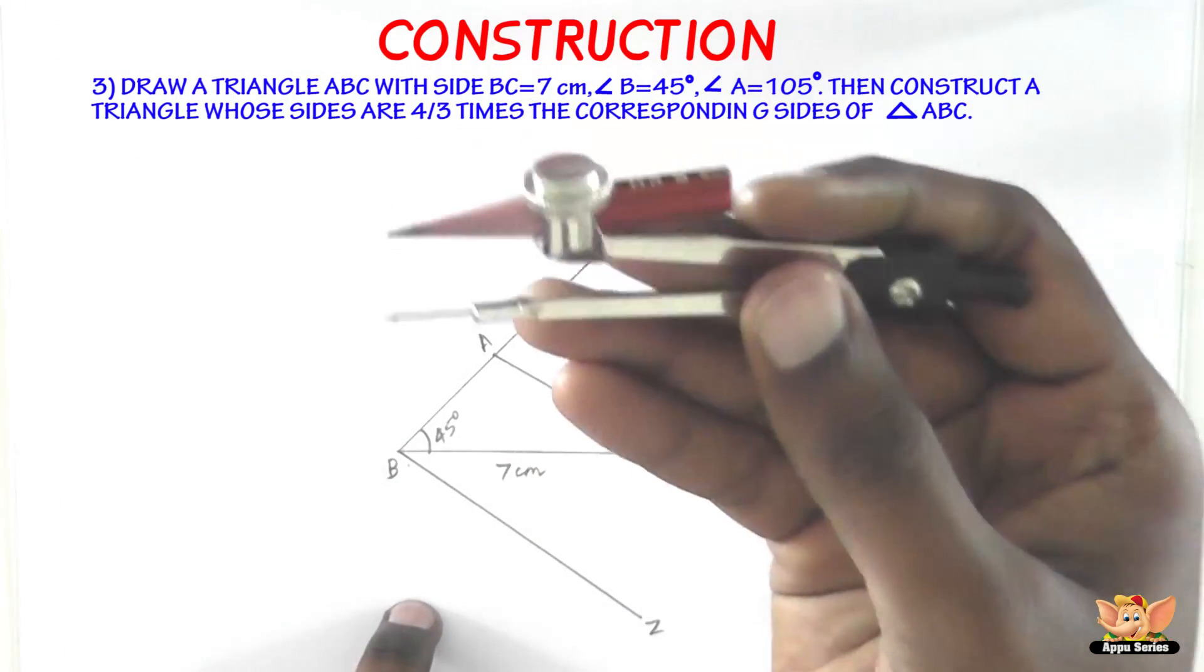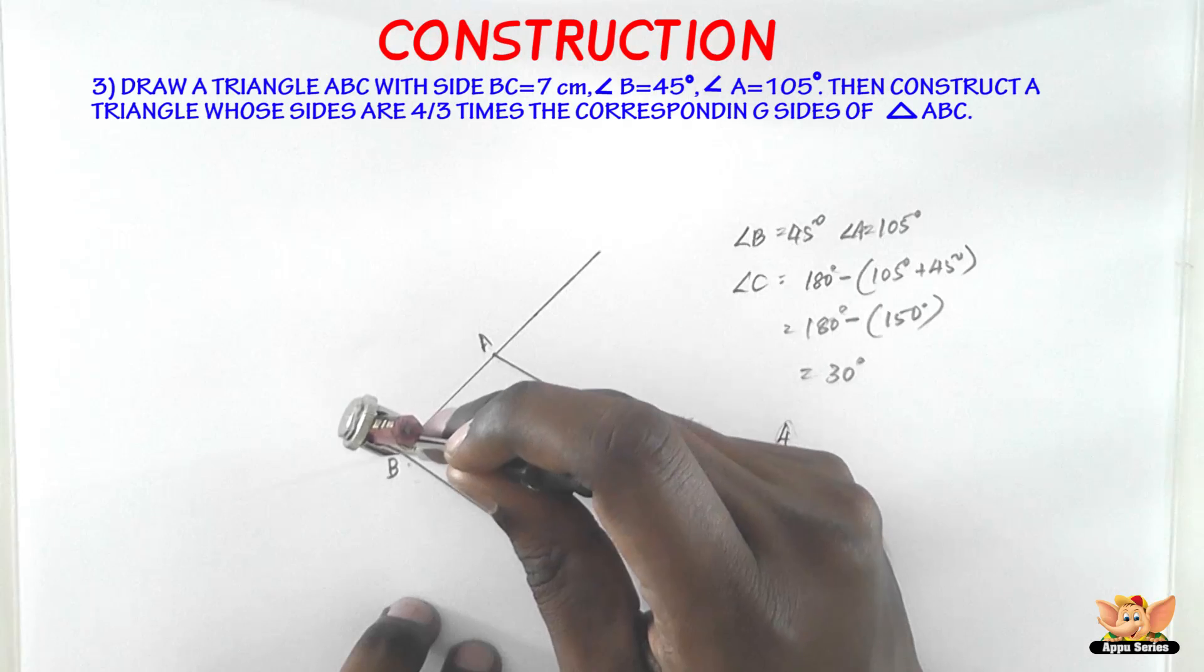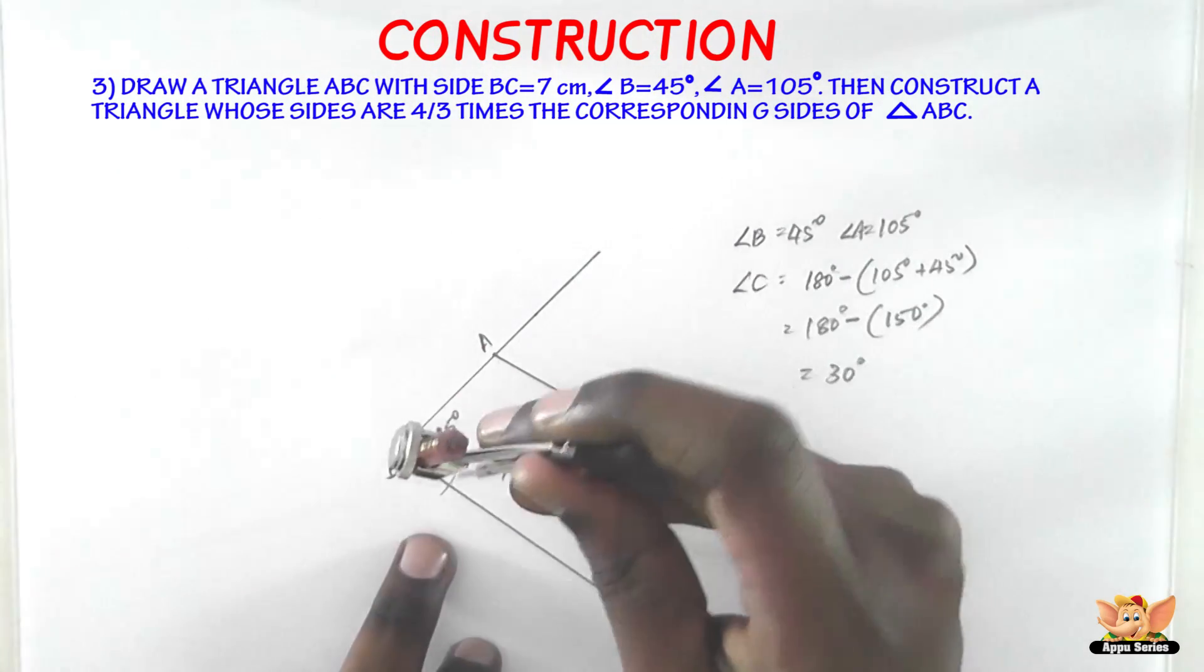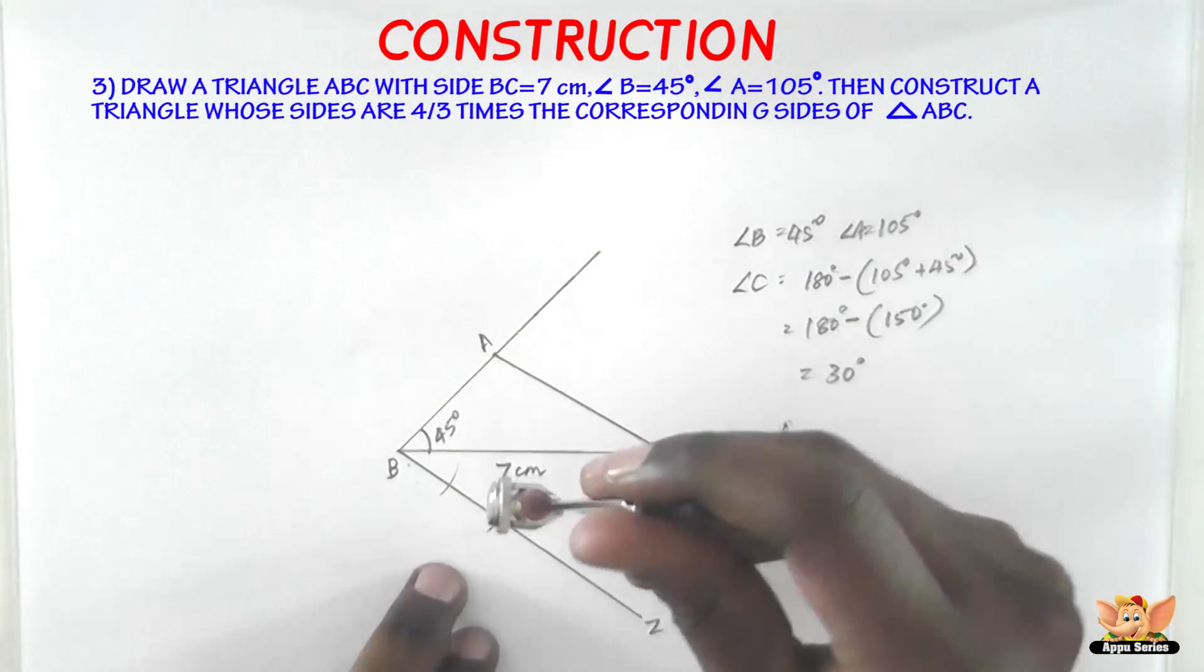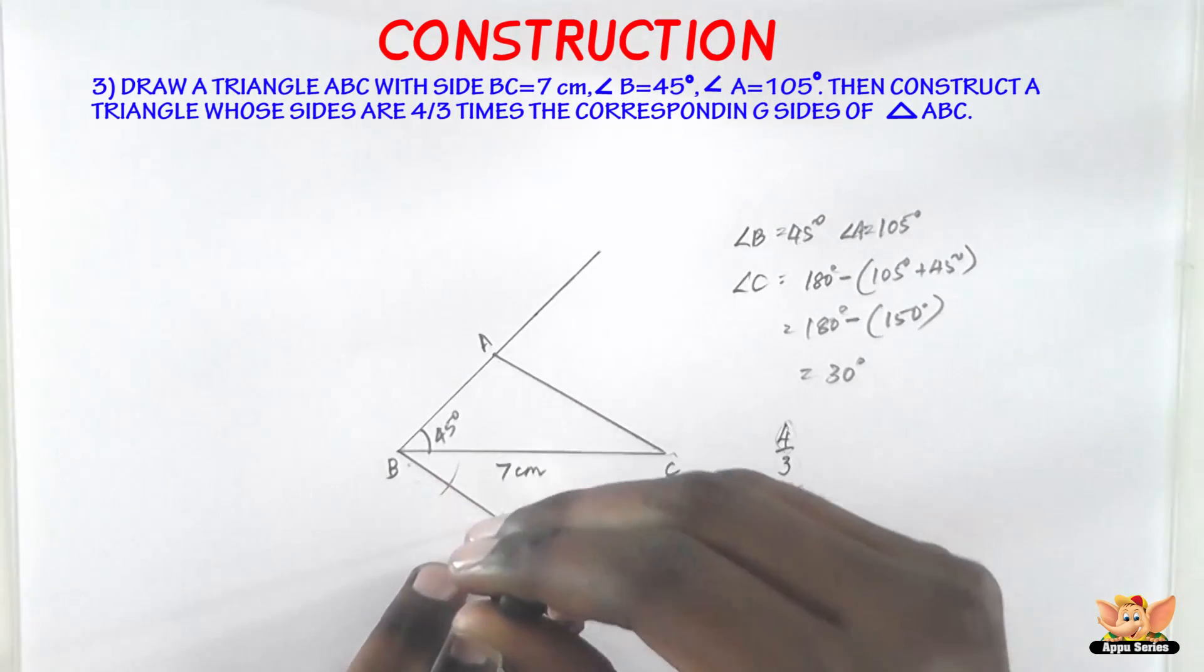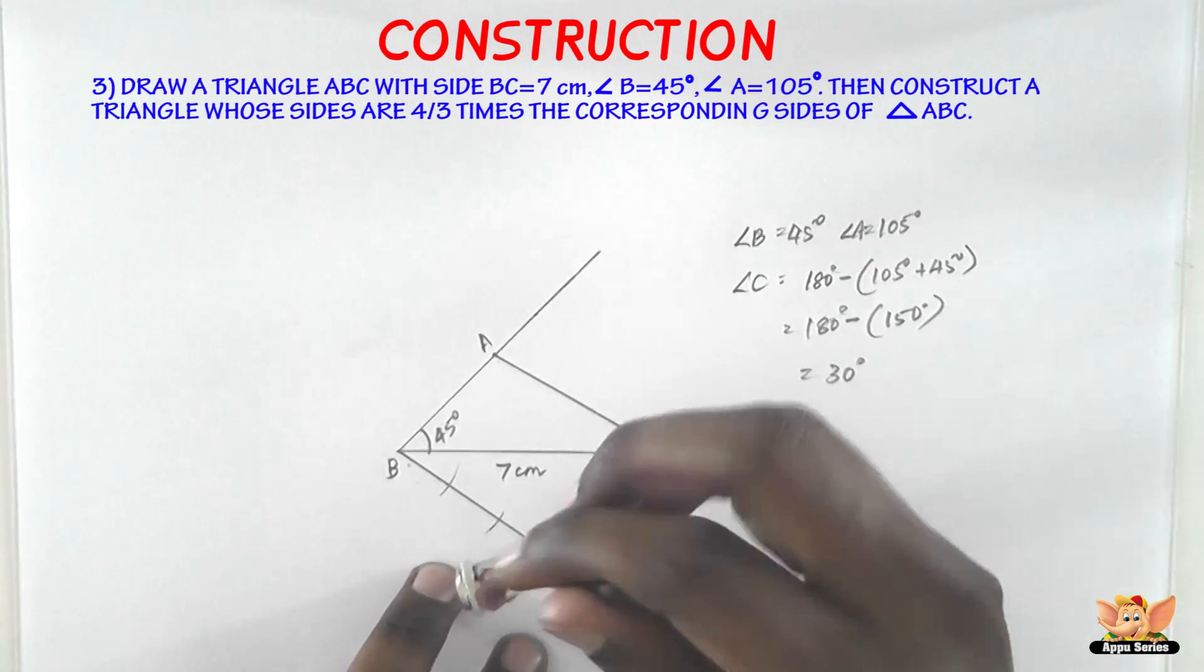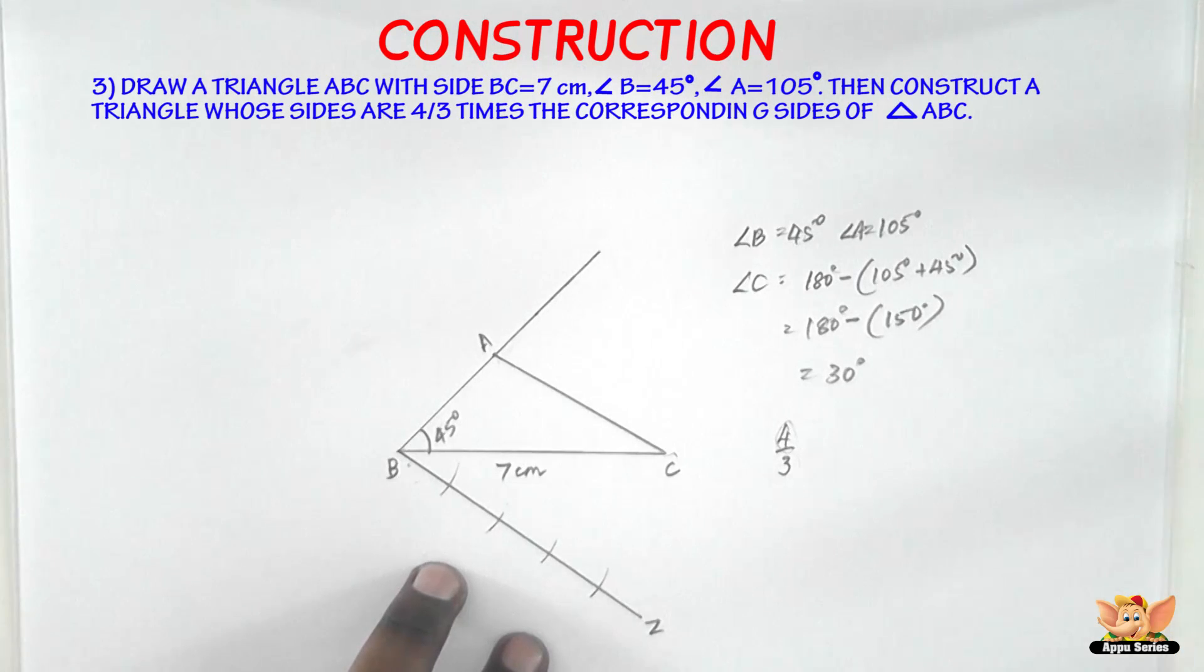And now take the compass with any measurement that you want, anything convenient to you. I'm taking this one. Keep it on B and start cutting arcs on BZ. So here it is. And another one. And another one. That makes it 3. We need 4. So last one. So here it is.